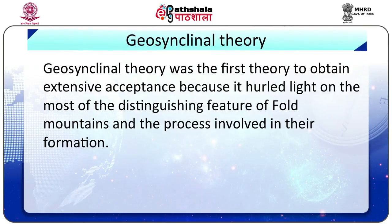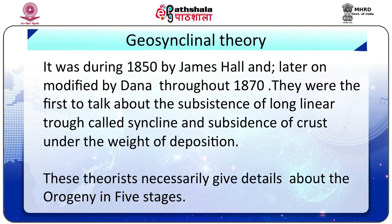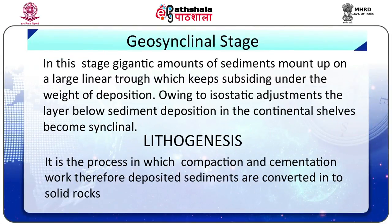Geosynclinal theory. The geosynclinal theory was the first theory to obtain extensive acceptance because it shed light on most of the distinguishing features of fold mountains and the processes involved in their formation. It was proposed during 1850 by James Hall and later modified by Dana throughout the 1870s. They were the first to talk about the existence of long linear troughs called synclines and subsidence of crust under the weight of deposition. These theorists essentially describe orogeny in five different stages.